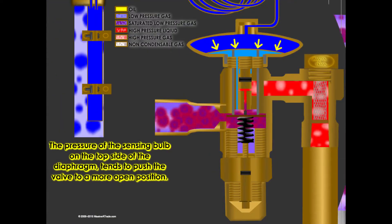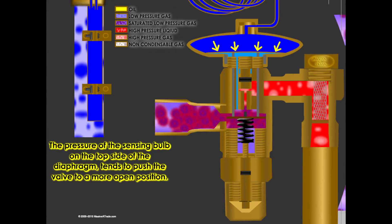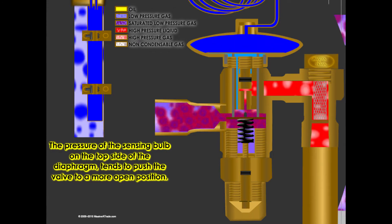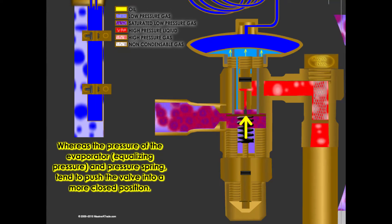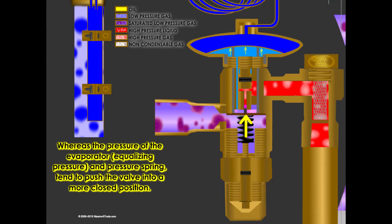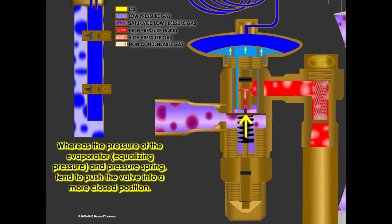The pressure of the sensing bulb on the top side of the diaphragm tends to push the valve to a more open position, whereas the pressure of the evaporator, or equalizing pressure, and pressure spring tend to push the valve into a more closed position.